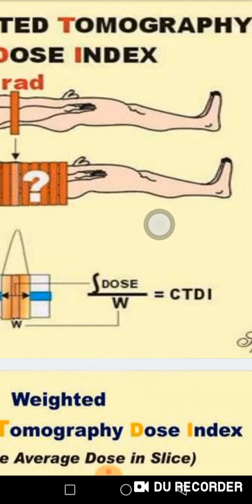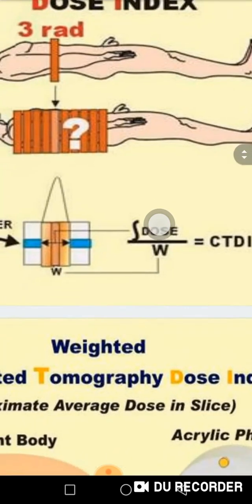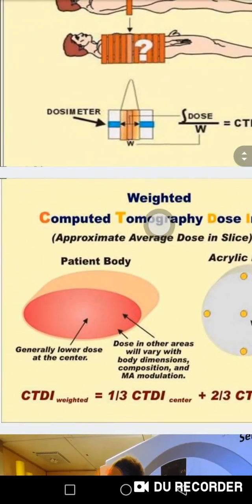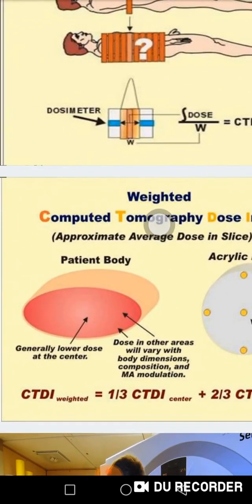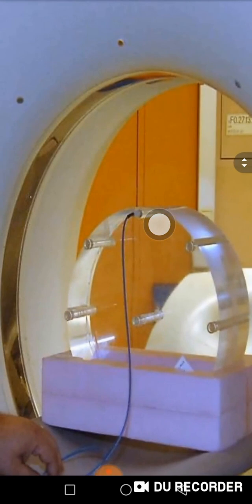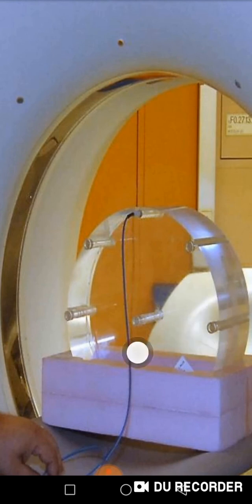I assume a phantom with a group of sections, performing integration for each individual section based on their weights to derive the weighted CTDI index. This is calculated using a phantom — the medical physicist works with this phantom, which has holes: one in the center and holes in the peripheral areas at top, bottom, right, and left, for placing ionization chambers.